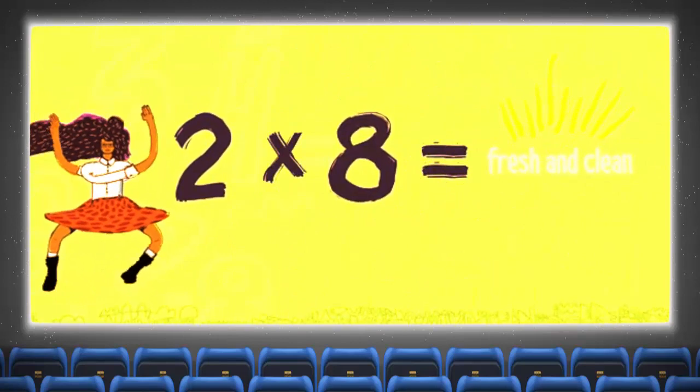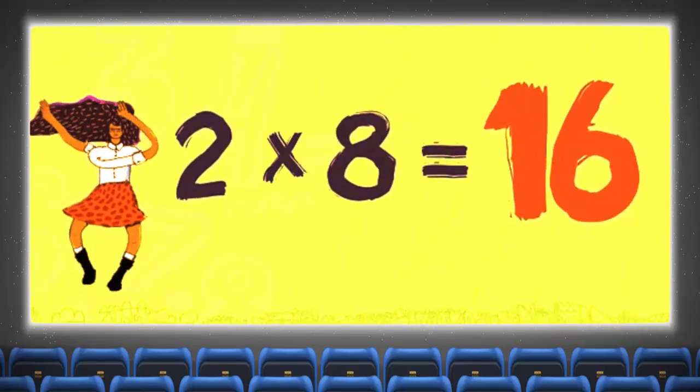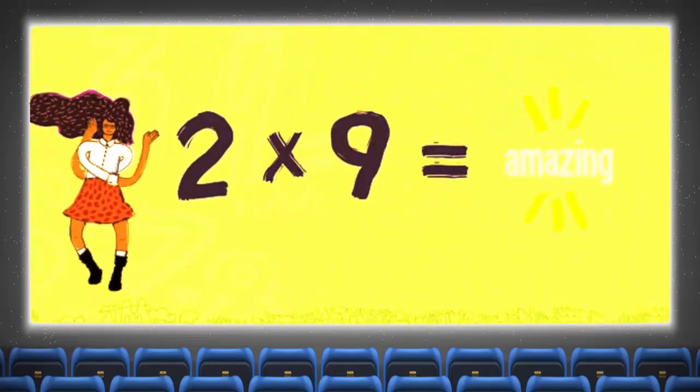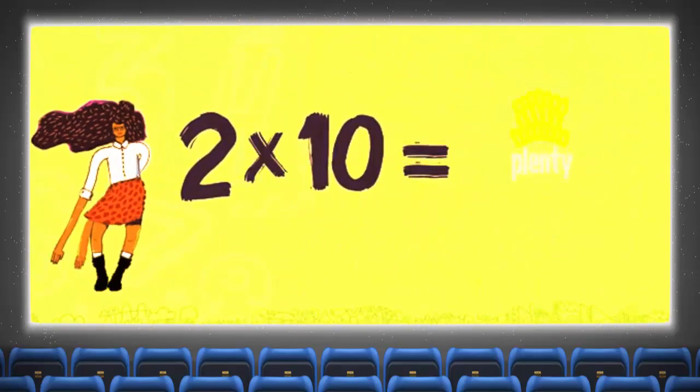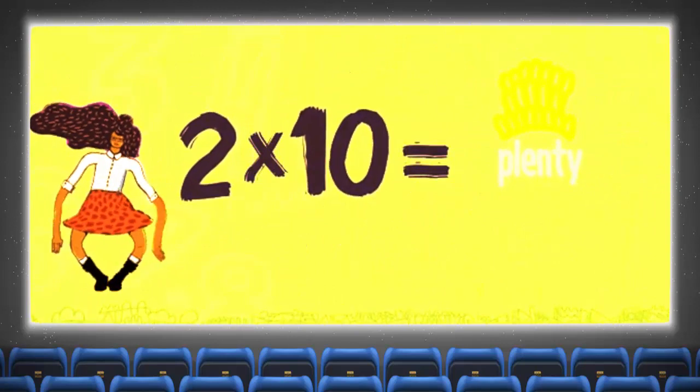Two times eight, fresh and clean, two times eight is sixteen. Two times nine is amazing, two times nine is eighteen. Two times ten is plenty, cause two times ten is twenty.